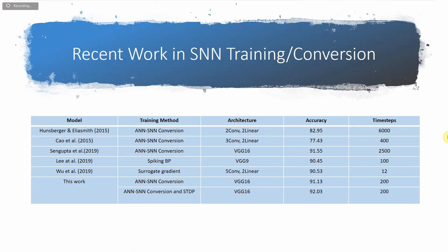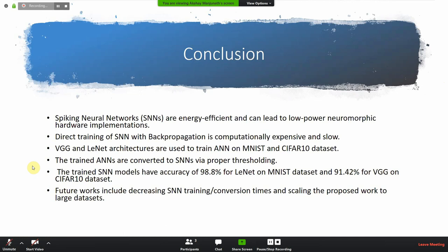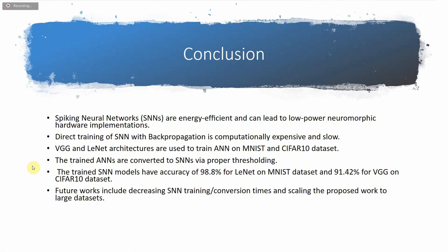In conclusion, SNNs are energy efficient and can lead to low power neuromorphic hardware implementations. However, direct training of SNNs with backpropagation is very expensive and slow. We explored VGG and LeNet architectures for CIFAR-10 and MNIST datasets respectively, and used proper thresholding techniques to ensure near lossless accuracy in SNN inference — achieving 90.8 percent for MNIST and 91.40 percent for VGG. Future work includes decreasing SNN training and conversion times and scaling the proposed work to larger datasets.